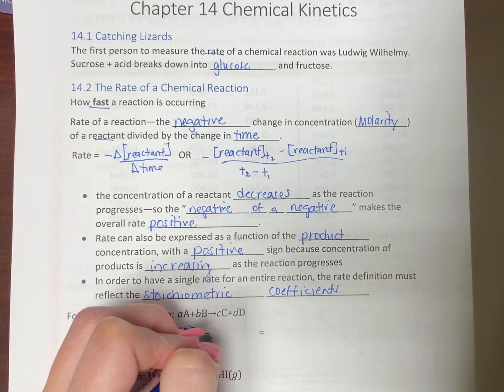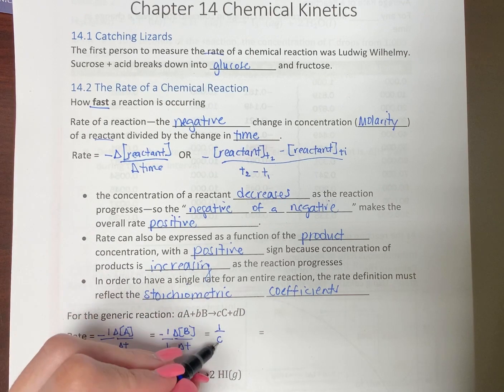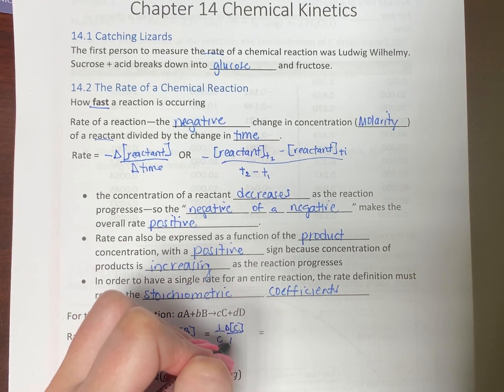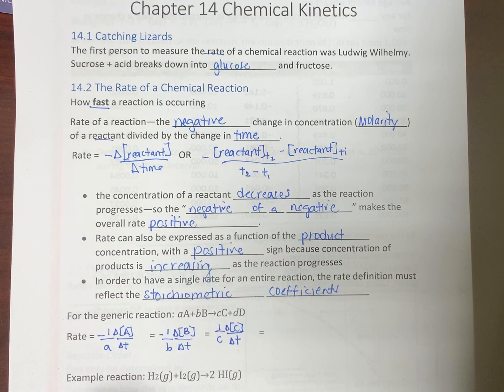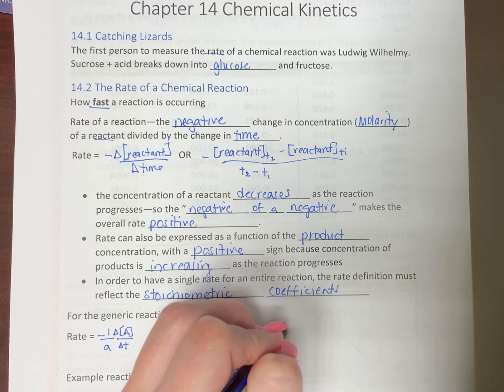We're going to use positive signs. If you want to put a positive, great. I usually just don't. We're going to have 1 over the coefficient, change in concentration of the product, change in time. 1 over D, change concentration of the product over change in time.